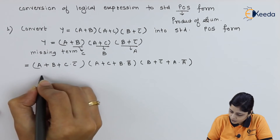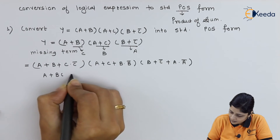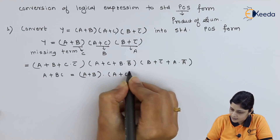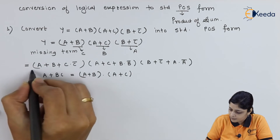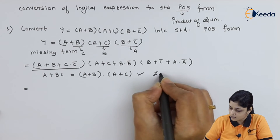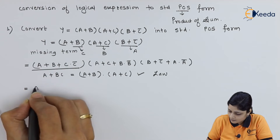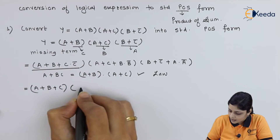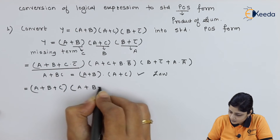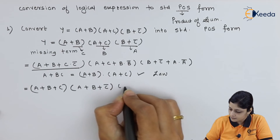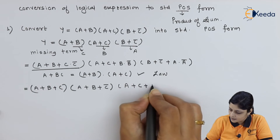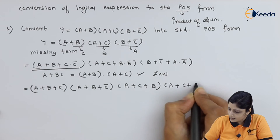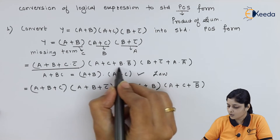According to the boolean law: a plus (b · c) equals (a plus b) · (a plus c). We will expand all the terms according to this law. For the first term (a plus b plus c · c̄), you get (a plus b plus c) in one bracket and (a plus b plus c̄) in the second bracket. For the second term (a plus c plus b · b̄), you get (a plus c plus b) · (a plus c plus b̄).